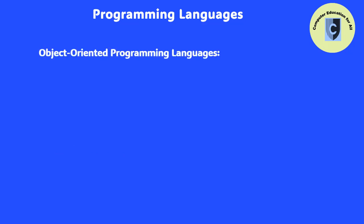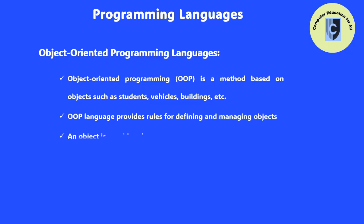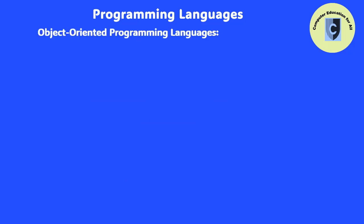Object-Oriented Programming (OOP) refers to a programming method that is based on objects such as student, vehicle, building, etc. Object-Oriented Programming Language provides a set of rules for defining and managing objects. An object can be considered a thing that can perform a set of activities. For example, the object vehicle can be defined as an object that has number of wheels, number of doors, color, number of seats, etc. The set of activities that can be performed on this object include steer, accelerate, brake, etc.